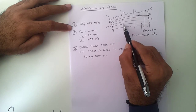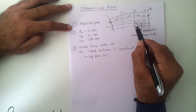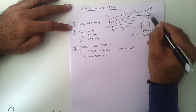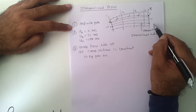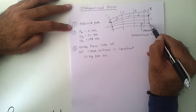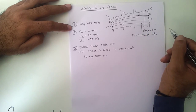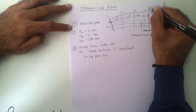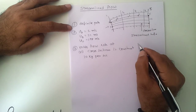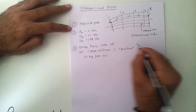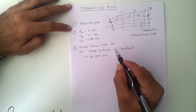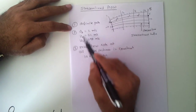So 10 kg enters at each cross section per second, and 10 kg leaves at the final cross section per second. The mass flow rate remains constant at all locations throughout the pipe.